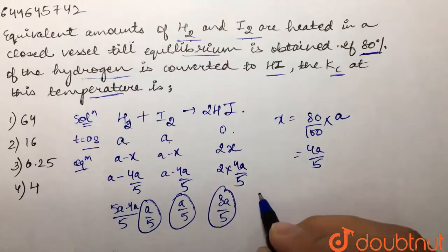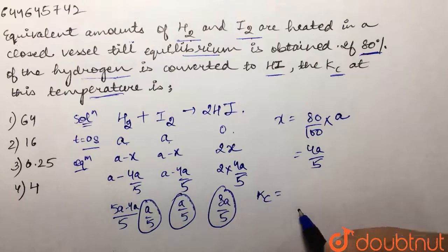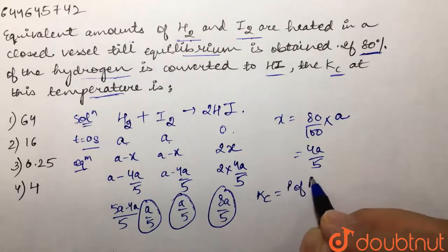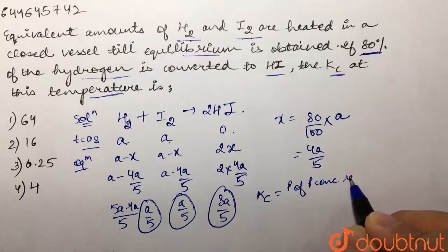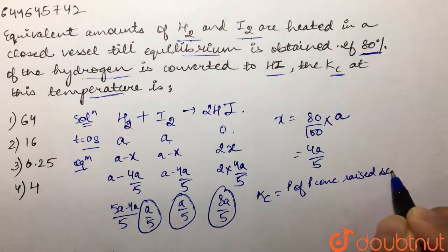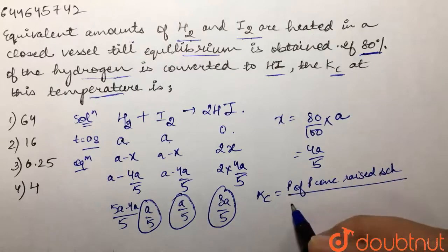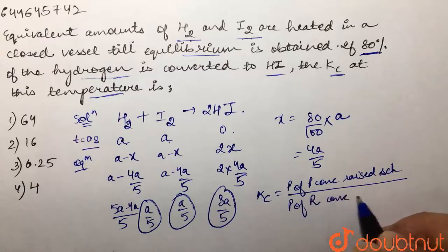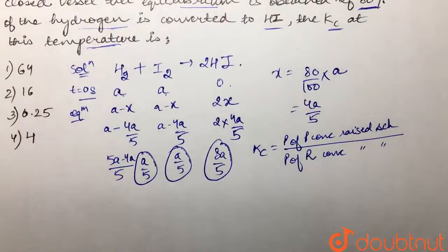Now we're going to write the Kc expression. What is Kc? Kc is product of product concentrations raised to power their stoichiometry, divided by product of reactant concentrations raised to power their stoichiometry.